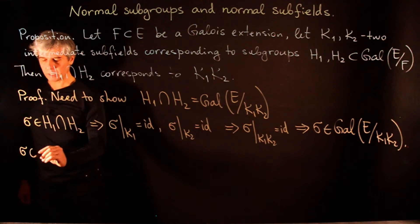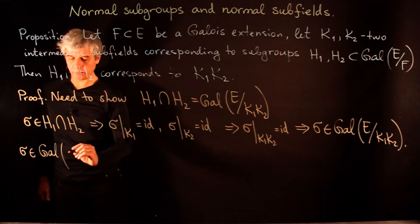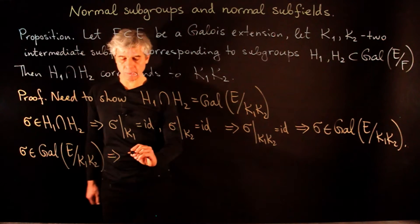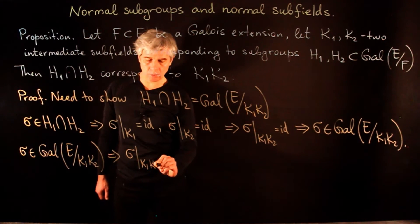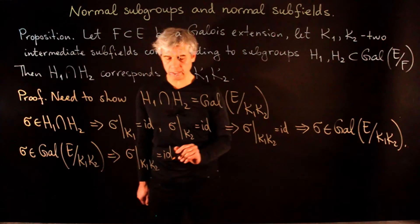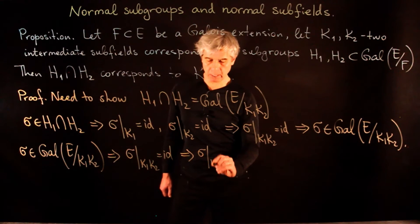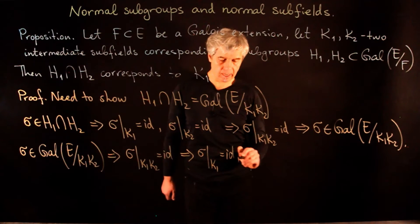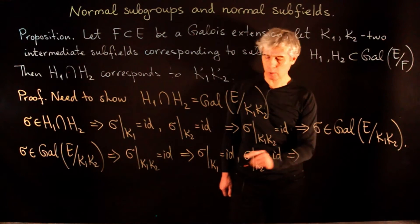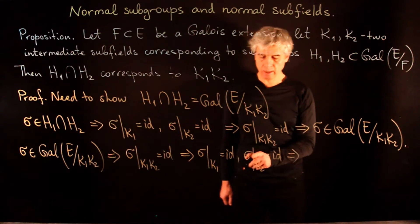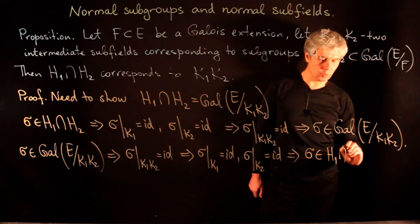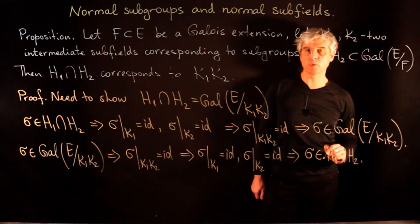Conversely, if σ belongs to the Galois group of E over k1·k2, this means σ restricted to k1·k2 is the identity. But both k1 and k2 are subfields inside k1·k2, so σ restricted to k1 is the identity and σ restricted to k2 is the identity. The first tells us σ belongs to H1 and the second that σ belongs to H2, so σ belongs to H1 ∩ H2. This completes the proof of the proposition.